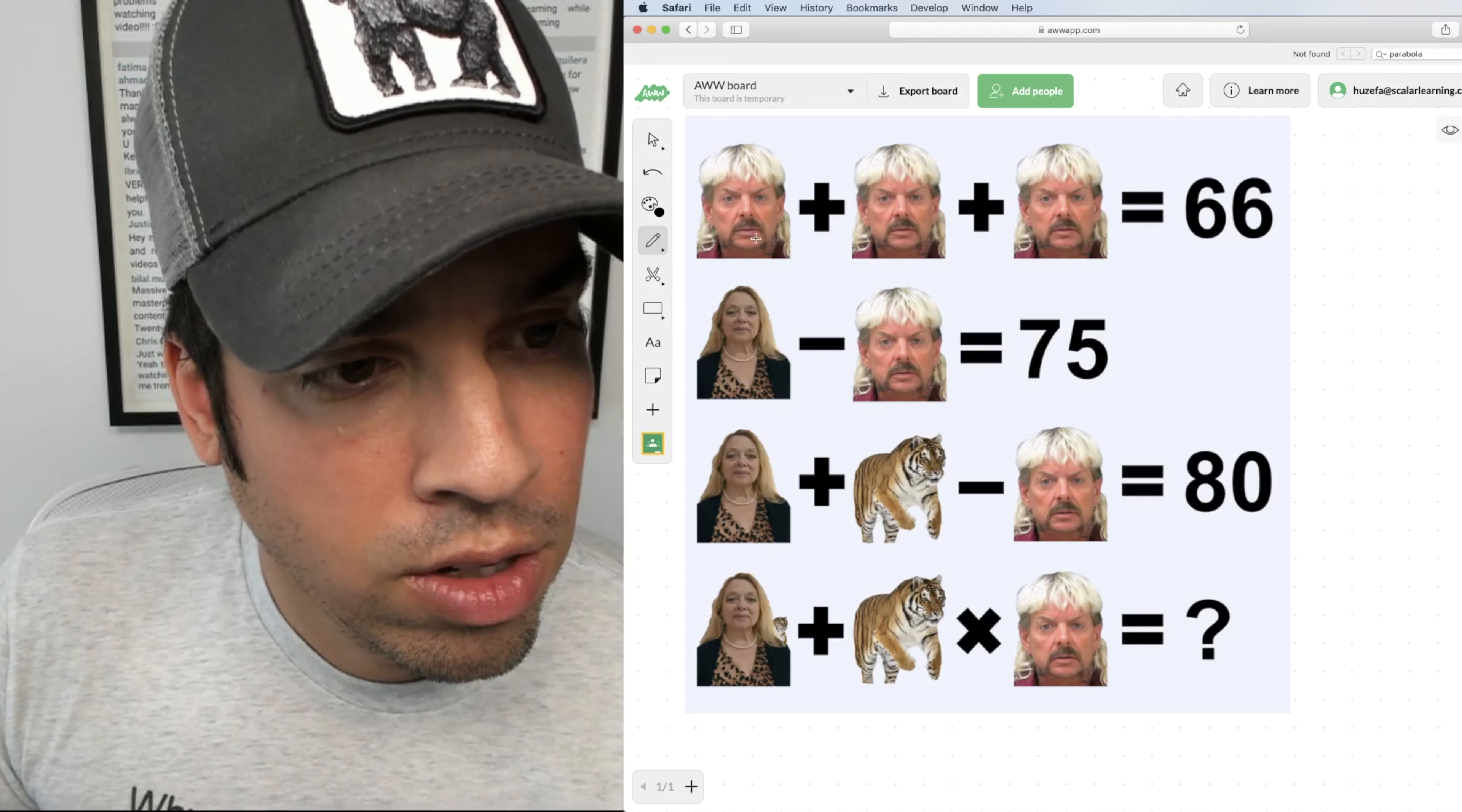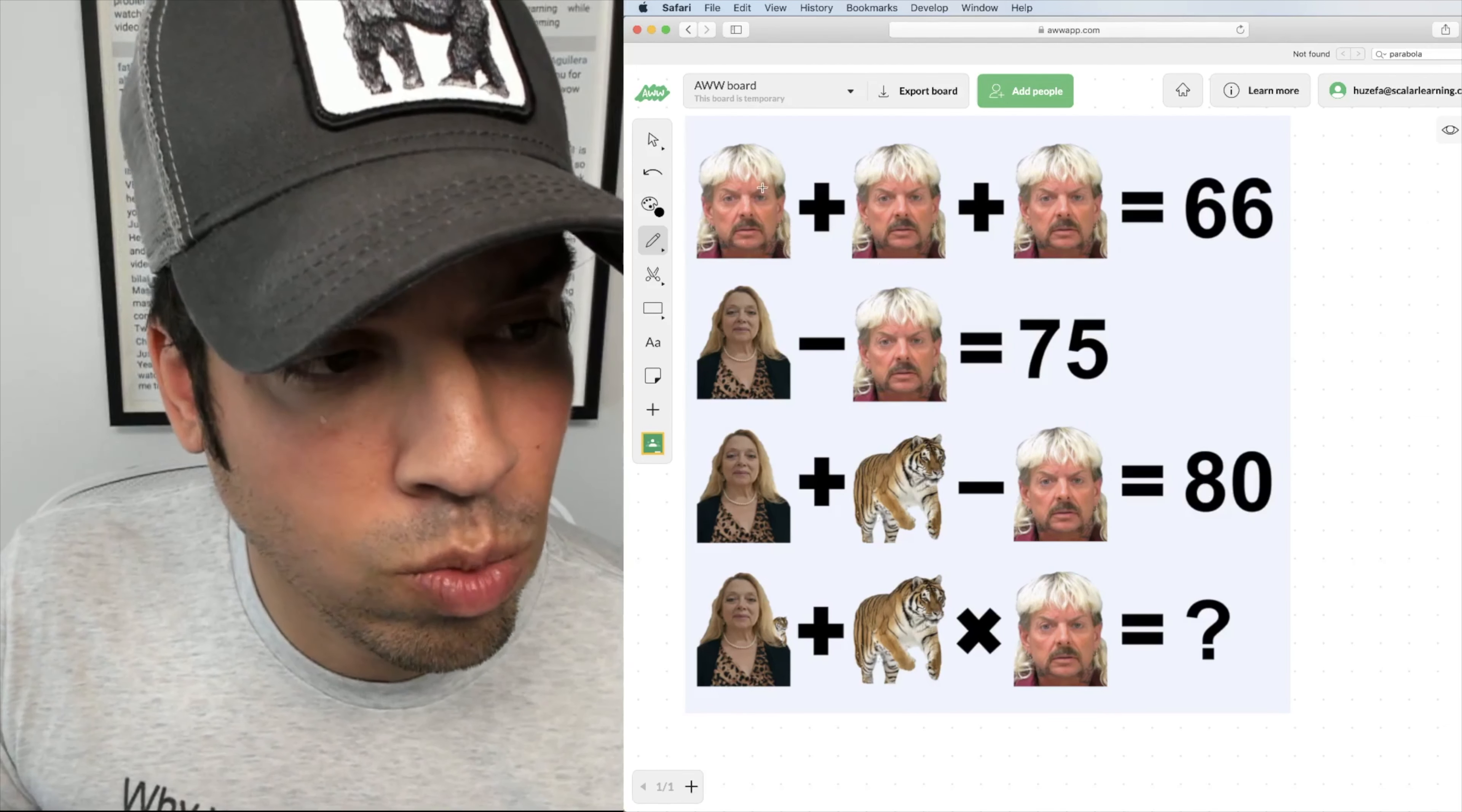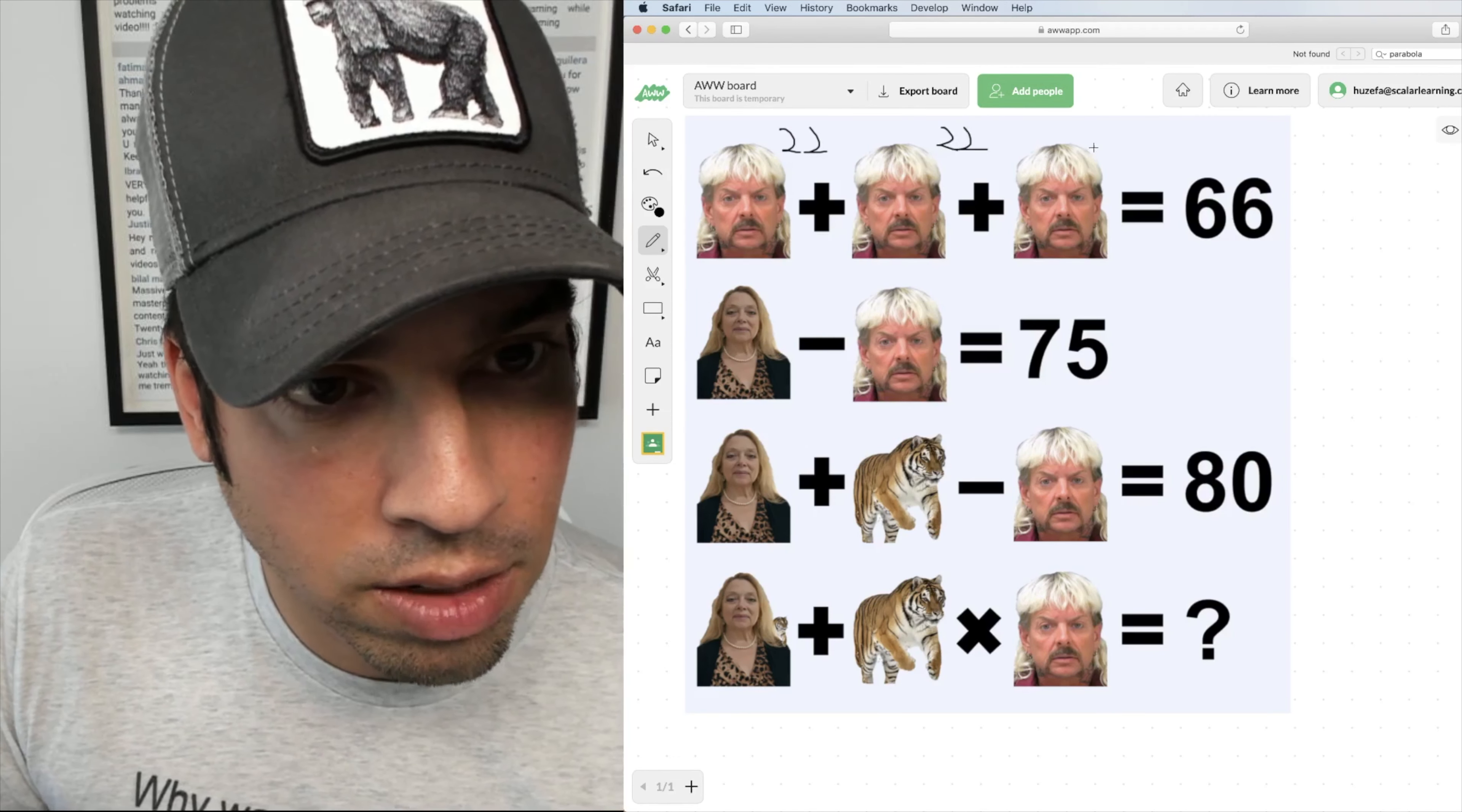So the first one we have three Joe Exotics adding up to be 66, which means three of them is 66, so one of them is 66 divided by 3, which of course is 22. So now we got a value of Joe Exotic for 22.